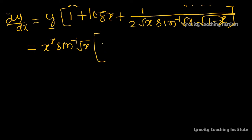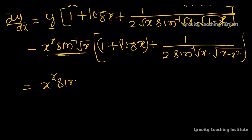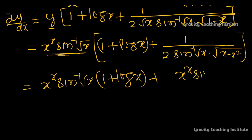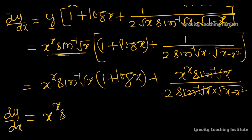Now substituting the value of y, which is x to the power x into sine inverse root x, we get: dy/dx equal to x to the power x · sine inverse root x into bracket of (1 plus log x) plus x to the power x · sine inverse root x upon 2 · sine inverse root x · root(x minus x square). Here sine inverse root x cancels.